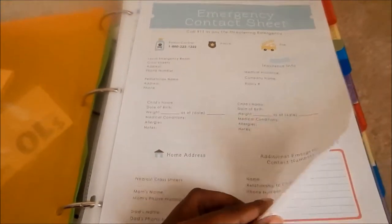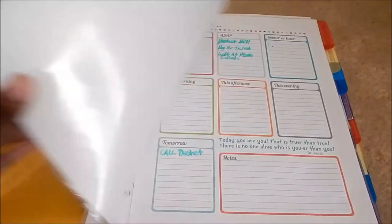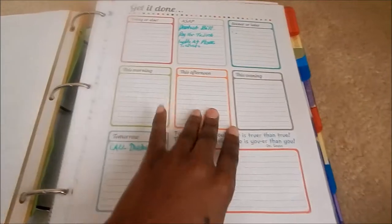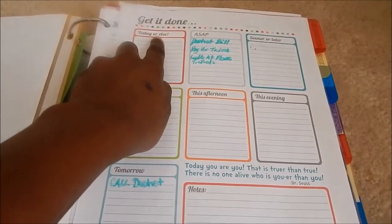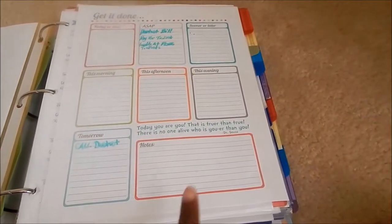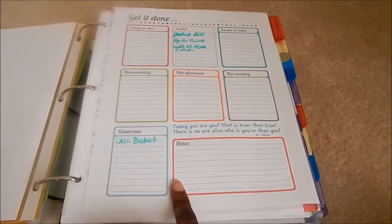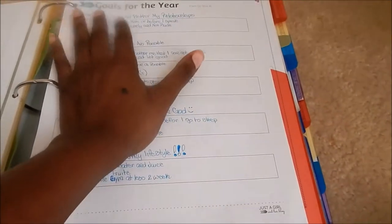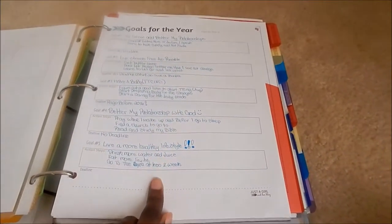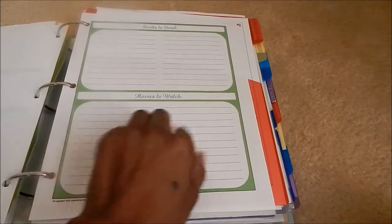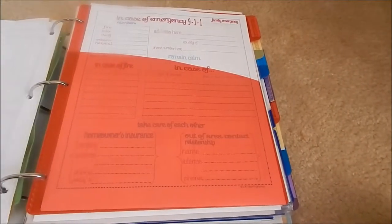Before we get to any tabs, the next page is get it done. You can see I already have some things listed that I need to do. It goes today or else, ASAP, sooner or later, this morning, afternoon, evening, tomorrow, and notes. Next is a goals of the year sheet with five goals, then books to read and movies to watch.